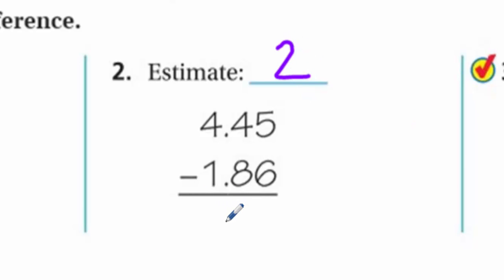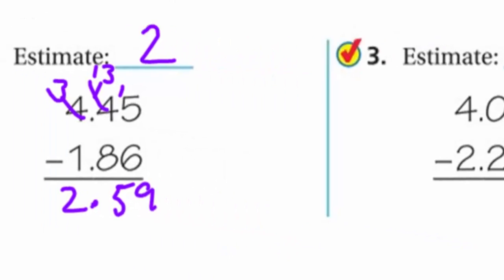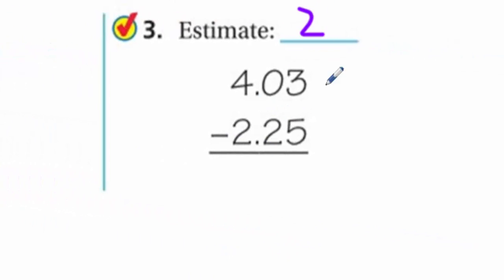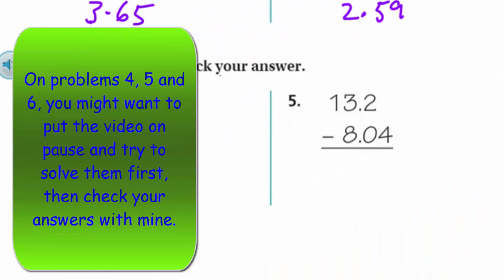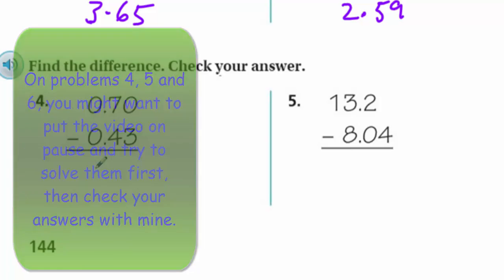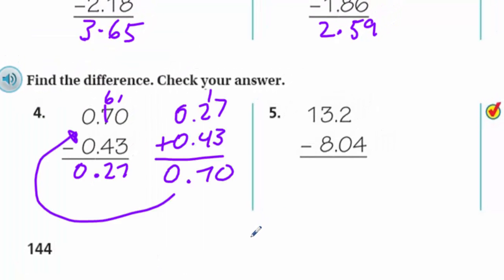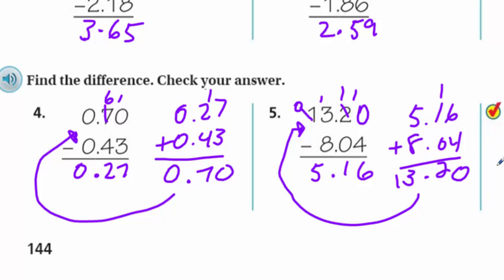Here we have 4, here we have about 2, 4 minus 2 is 2. Bring down the decimal. I see an issue here, regroup. I need to go all the way to the 4, I'm going to give that a 3, bring 1 over, that's going to be 13. We have 2.59 hundredths. Here I have 4 and 2. Decimal bring it down. Problem problem problem. That 10 is going to turn to a 9. 9 minus 2 is 7, and 3 minus 2 is 1. 1.78 hundredths. Just find the difference and check your answer.